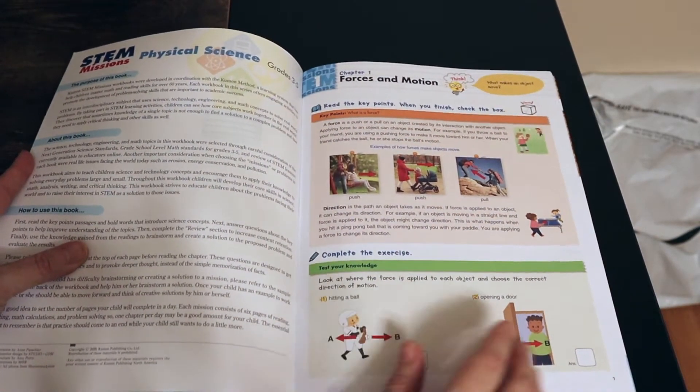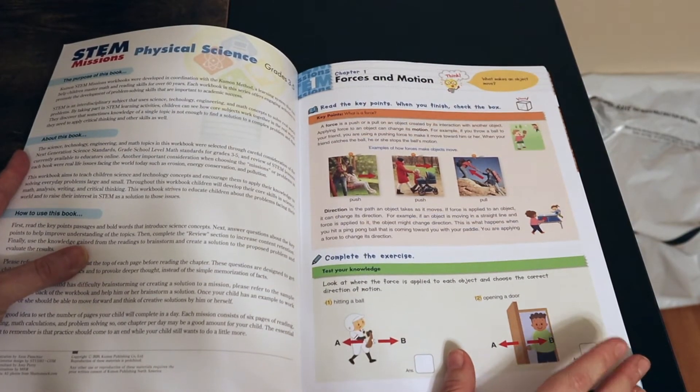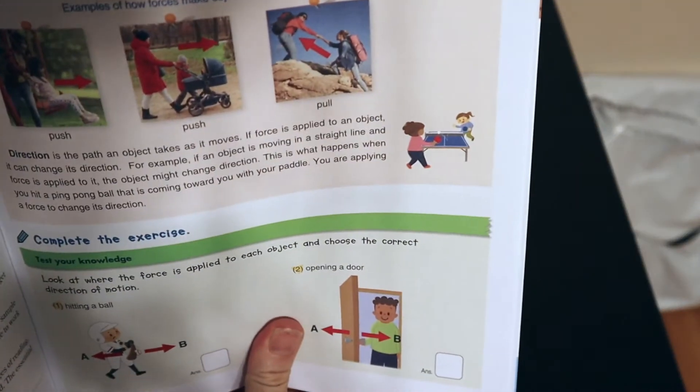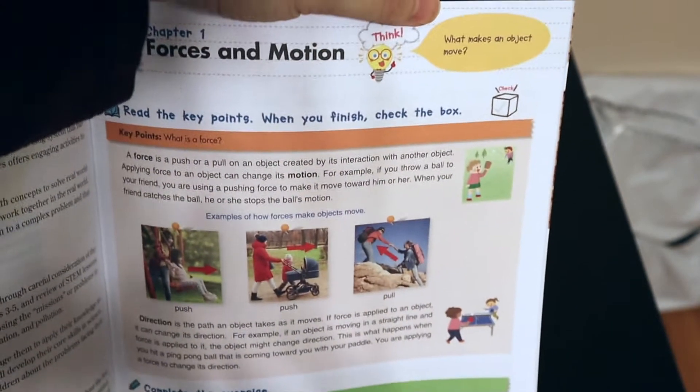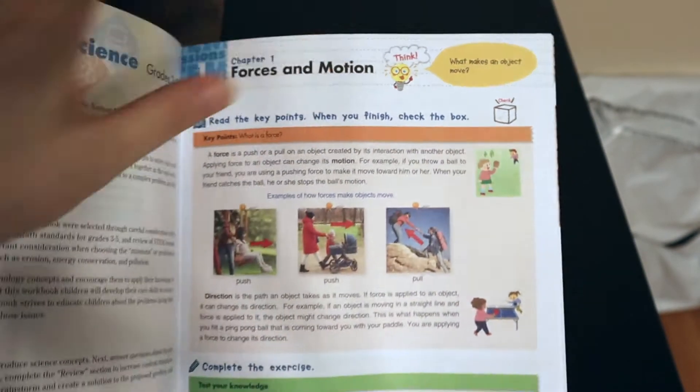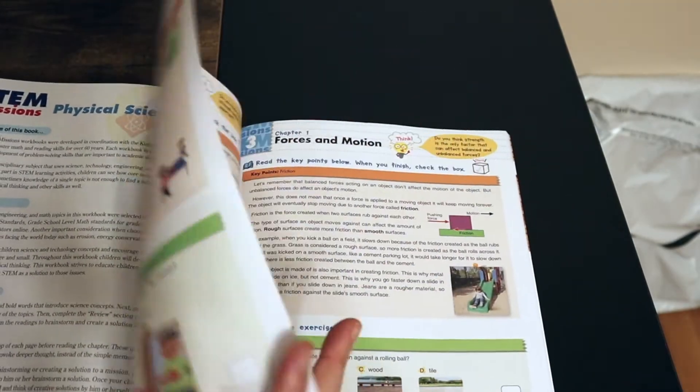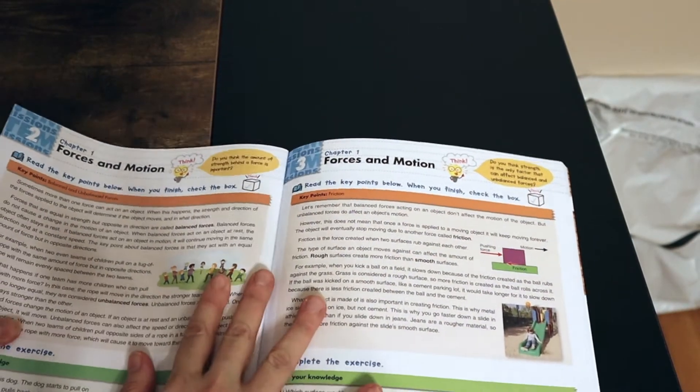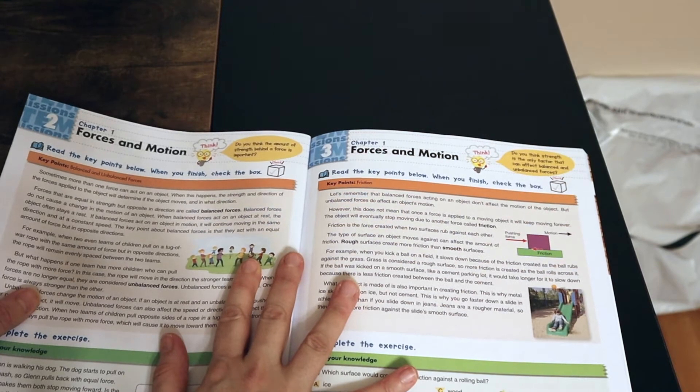So in Chapter 1, they go over forces and motion. They do have a little thing here that gets the kids thinking. What makes an object move for Chapter 1? Each page, they do ask a certain question to get the kids thinking. We're still on forces and motion.